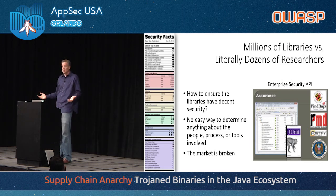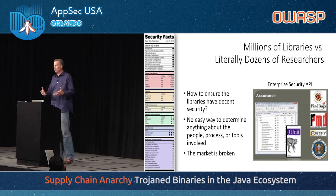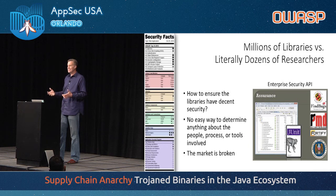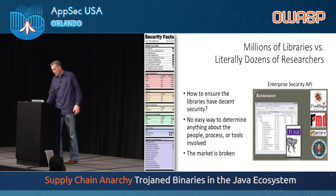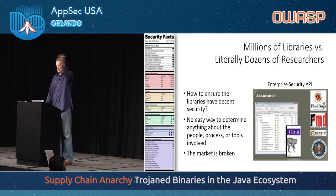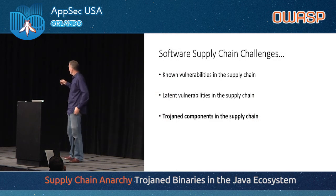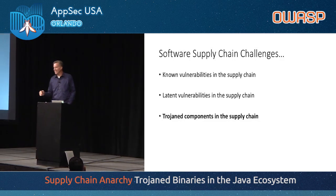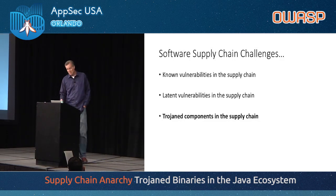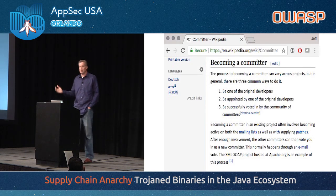There is no security facts label for software, and it's something that could really help. This is not a needle-in-a-haystack problem — this is a haystack full of needles. Now I want to move on to the last topic: trojan components in the software supply chain, which is actually really interesting because we trust these libraries with our entire enterprise.